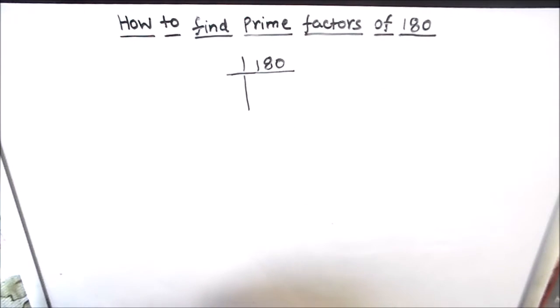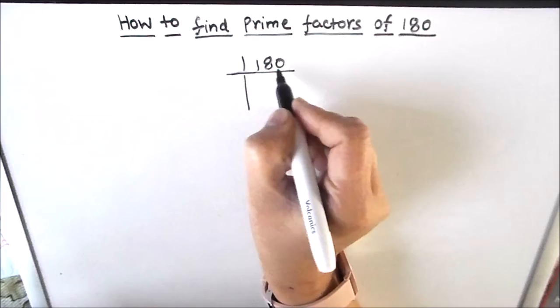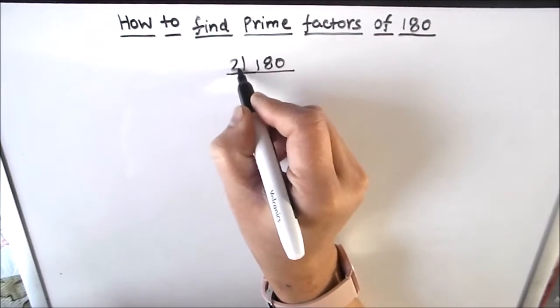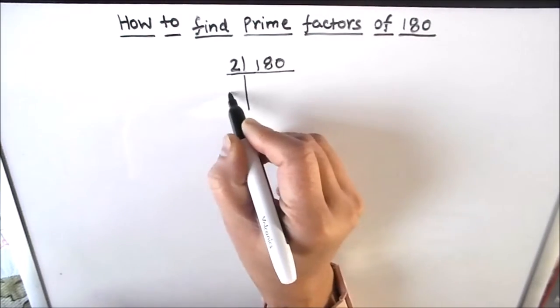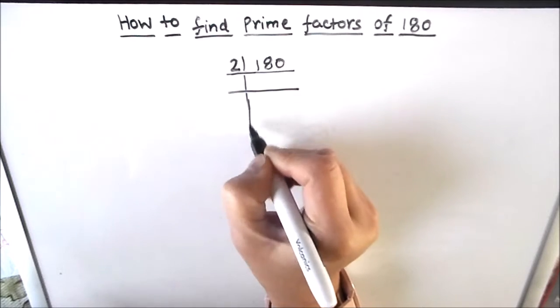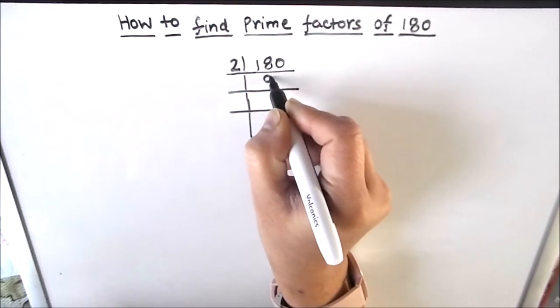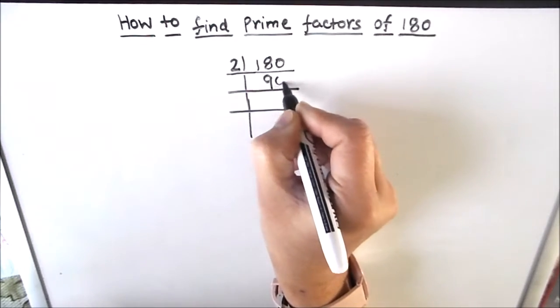So let's divide 180 by 2. As it is an even number, it is fully divisible by 2, so 2 is a factor of 180. 2 times 9 is 18 and 2 times 0 is 0.